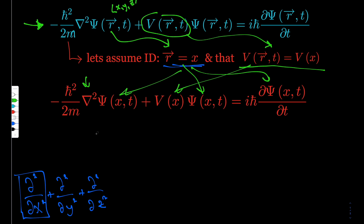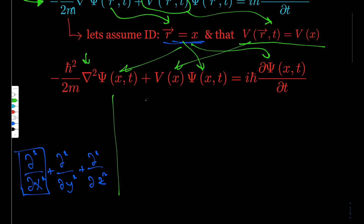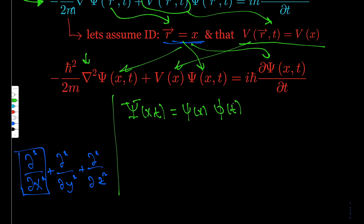What we're going to do first is take a postulate: we can represent the wave function, which is a function of both x and t, as a function of position — lowercase psi — times a function of time — phi. This is common practice in partial differential equations: we take a PDE that is a function of two variables and manipulate it so that we can create two separate differential equations, each a function of only x or t.